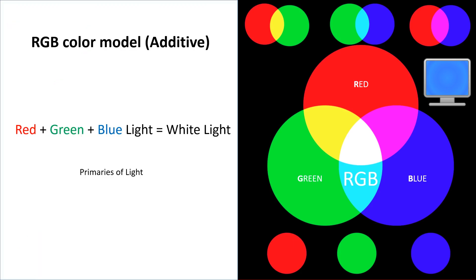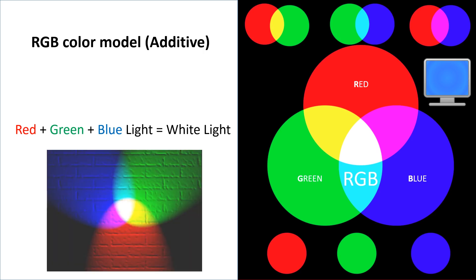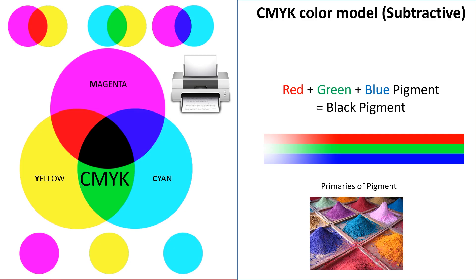The RGB additive color model works in terms of light. So basically red added to green added to blue equals white — additive. Let's look at a visual representation of what this would look like in real life. Here we have red light, green light, and blue light all shining on a dark wall. The result looks pretty similar to what we had before.